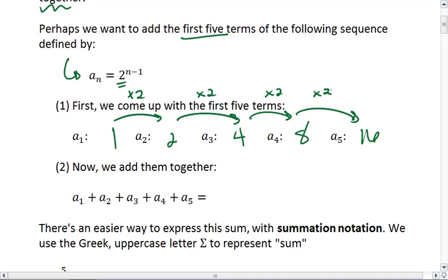All right, so now we'll add these terms together. We're going to take 1 plus 2 plus 4 plus 8 plus 16. I realize that 2 plus 8 is going to be 10, 4 plus 16 will be 20, that will give me 30, so this is going to be 31. And that is the sum of our series.